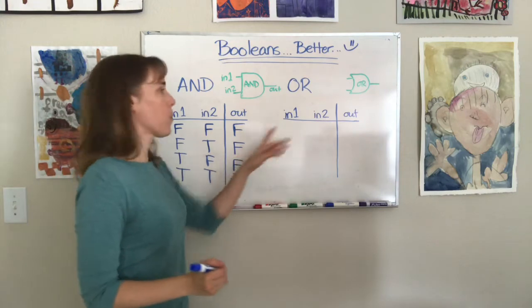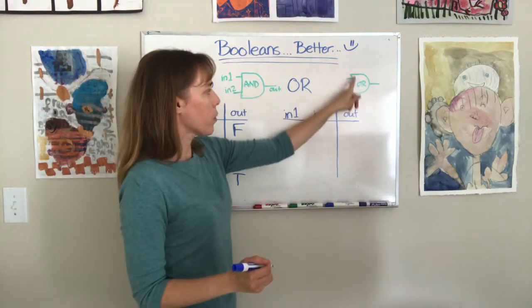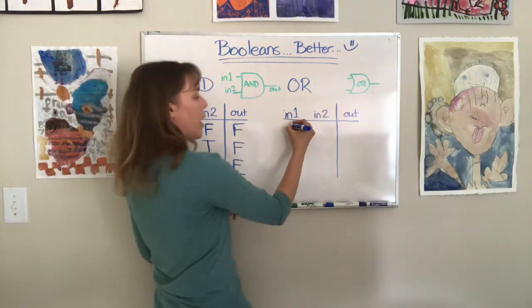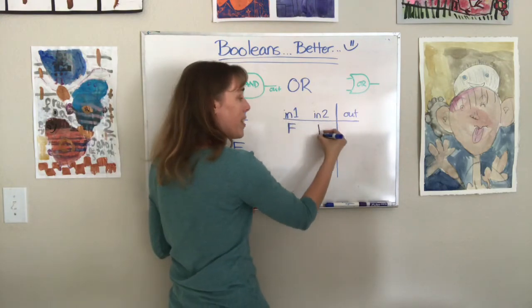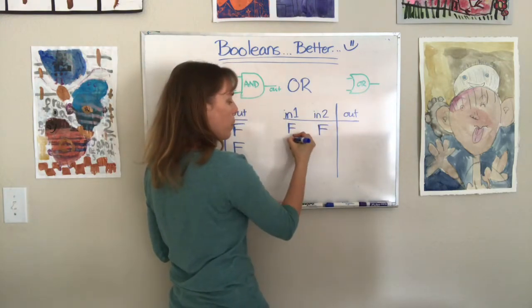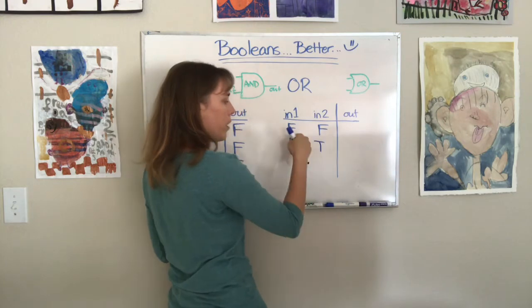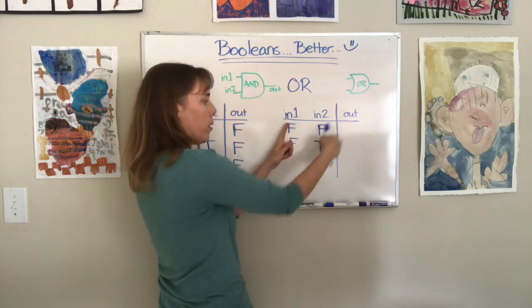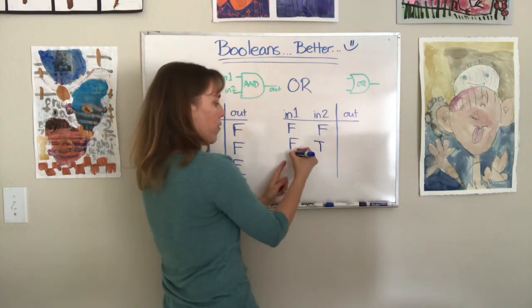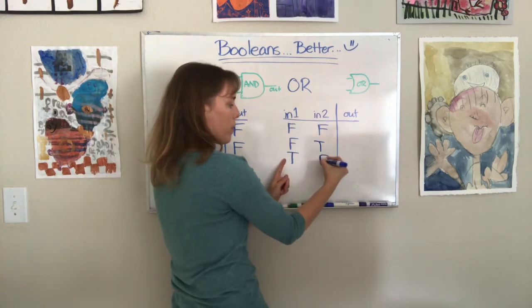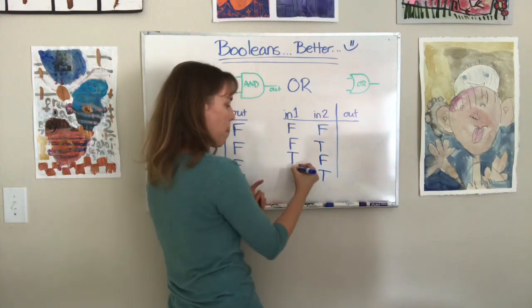Alright, let's do the same thing for OR. So an OR gate looks a little bit different because it has this curved line here. We're gonna have the same inputs because this is every set of possible inputs that you could have. If this is false, this could be false or true. If this is true, this could be false or true.